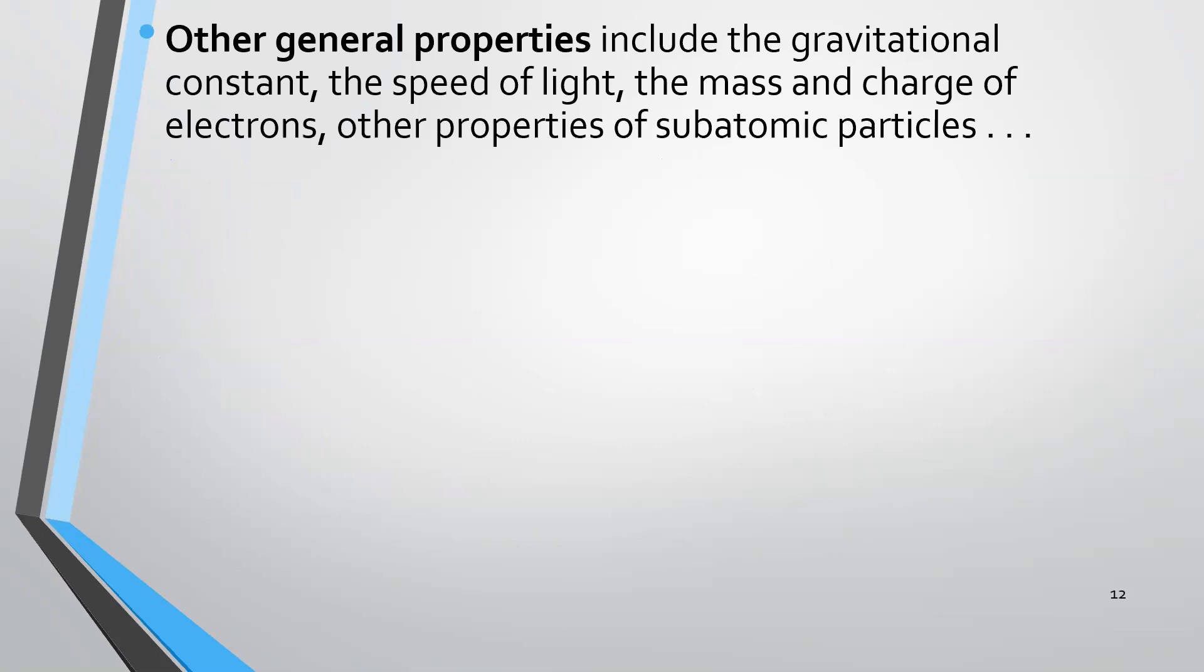We've considered those four. There are many other things that are relevant that need to be finely tuned: the gravitational constant, the speed of light, the mass, the charge of electrons, other properties of subatomic particles. The list goes on. Some people put 15 things on the list. Other people put up to 50 things on the list that need to be just right in order for living organisms to exist.